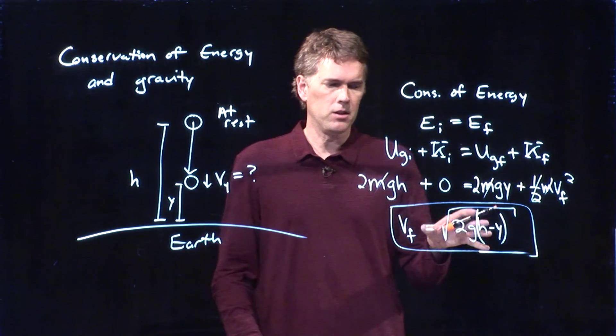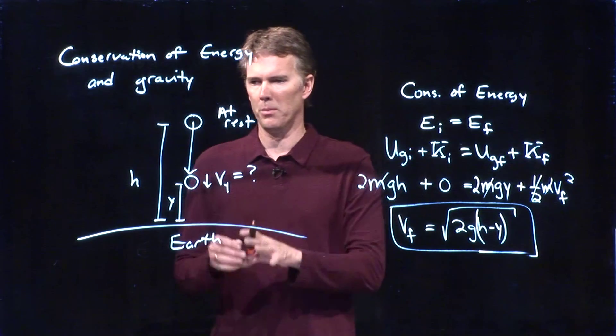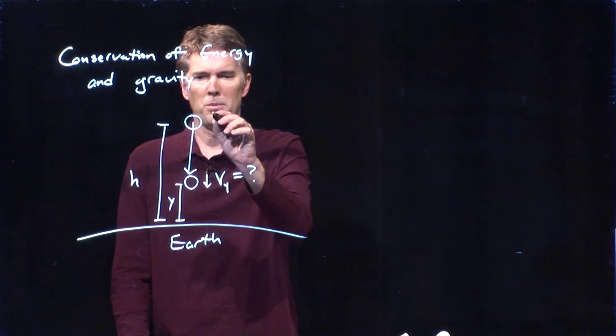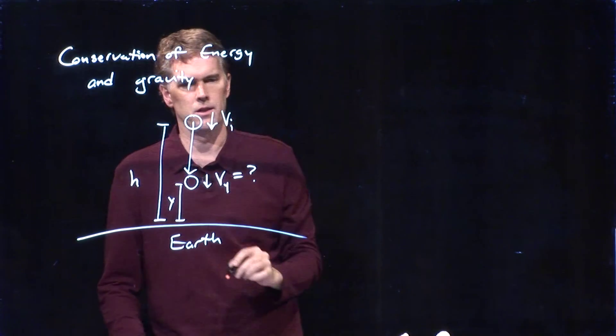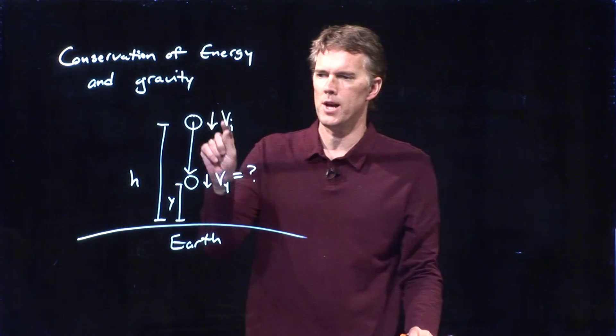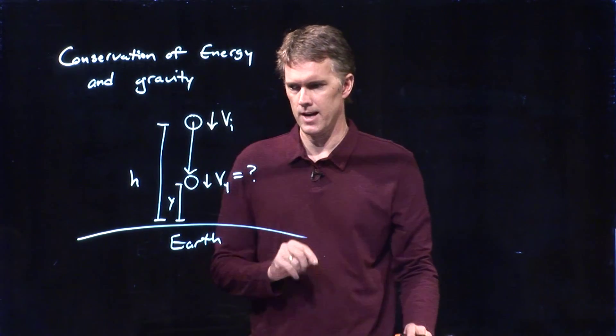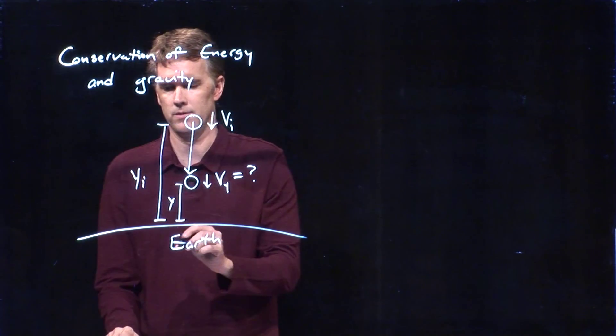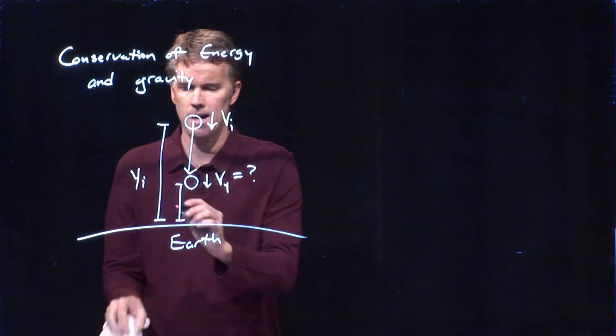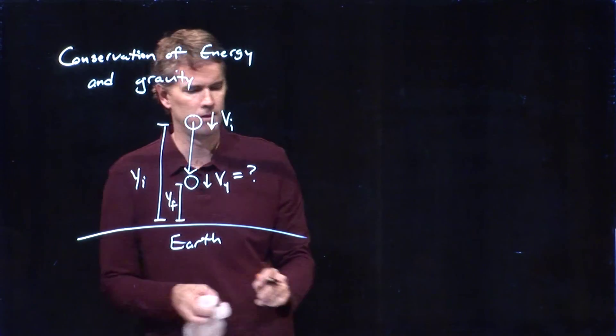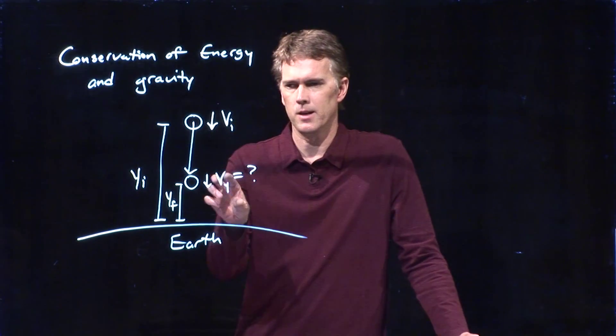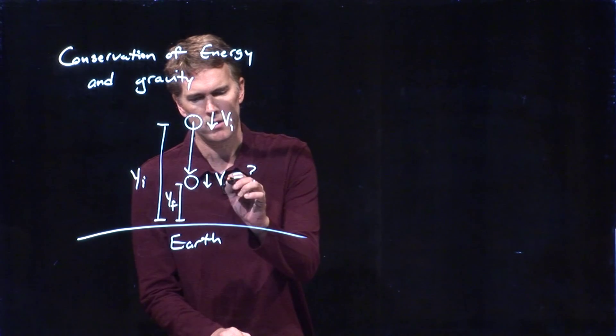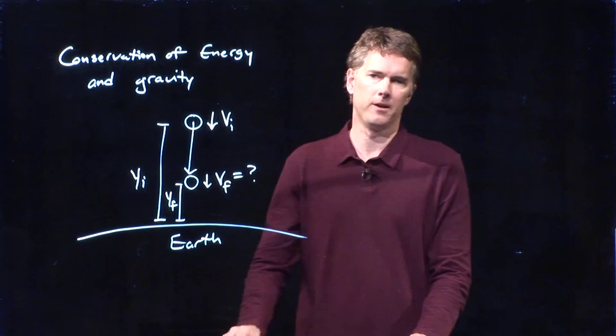Let's see if we can take this now and generalize it a little bit. Let's generalize the problem. And let's do it like this. The object is moving at speed VI. And it starts at a height y initial. It ends at a height y final. And let's see if we can calculate what this V final is equal to at this particular height.